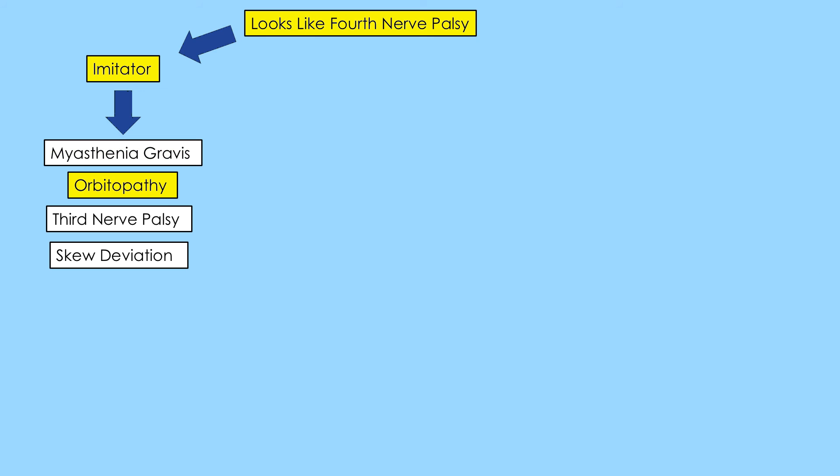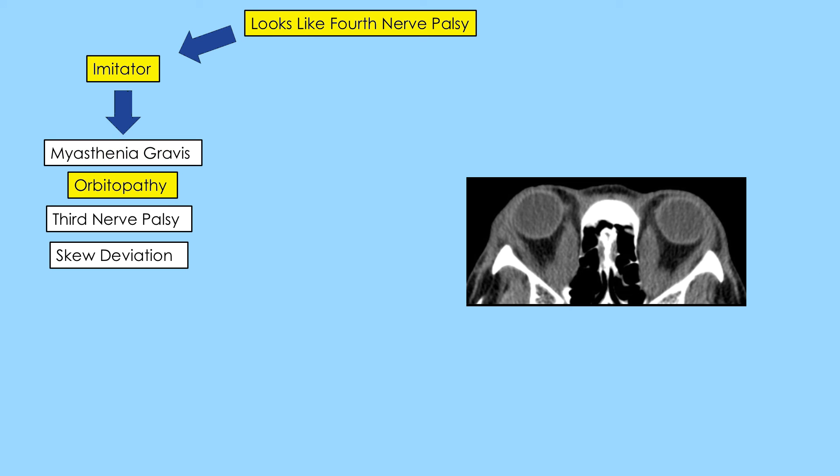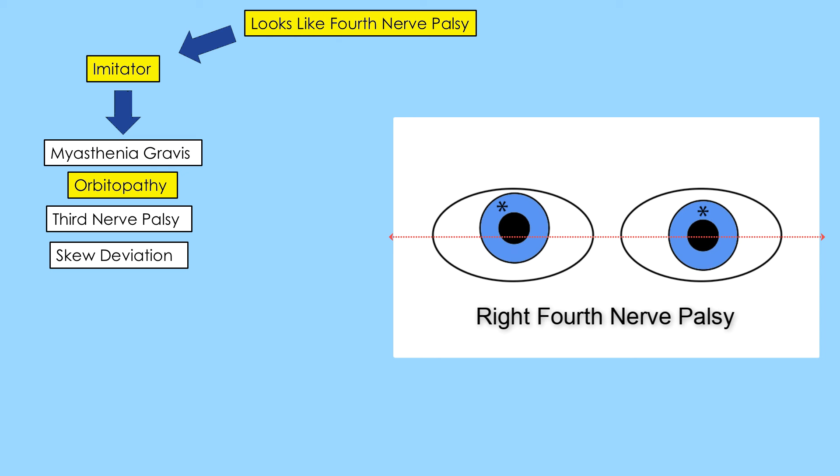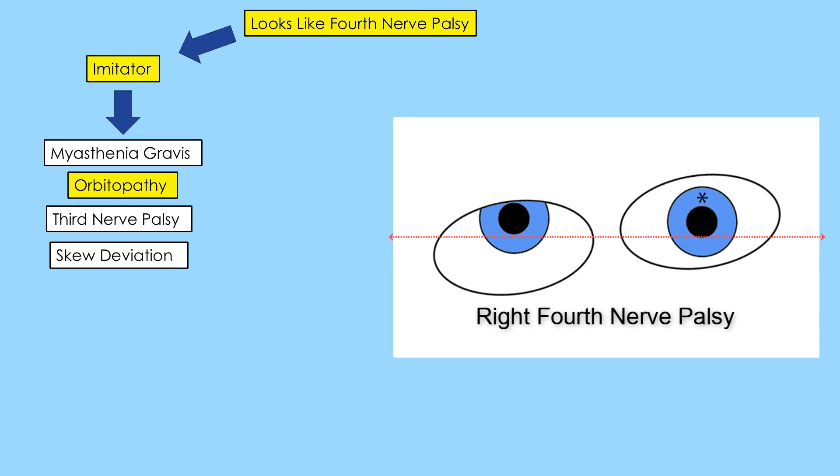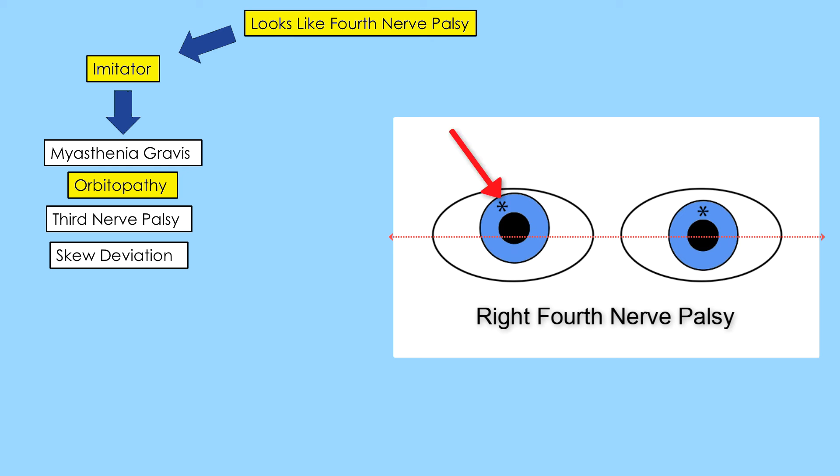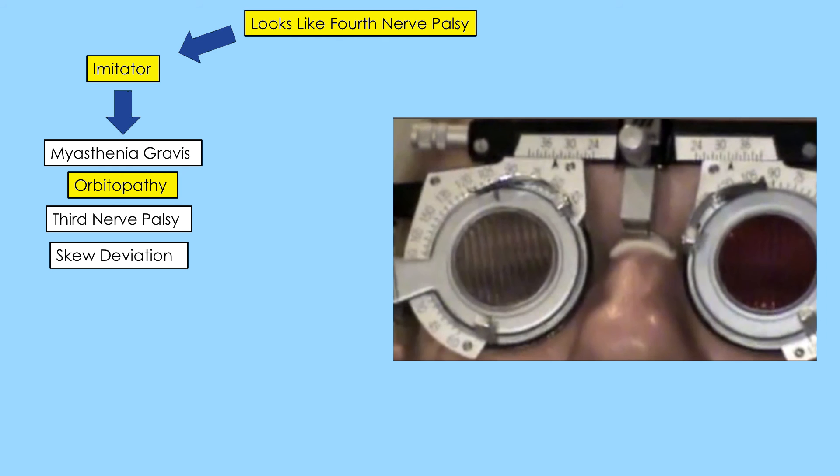An orbitopathy that causes swelling and scarring of the extraocular muscles can look like a fourth nerve palsy. Do not expect always to find orbital congestive features. They are often absent in the indolent and late phases of orbital inflammation. But an orbitopathy rarely has the cardinal features of a fourth nerve palsy obeying the three-step test and having ex-cyclodeviation on double Maddox rod testing.